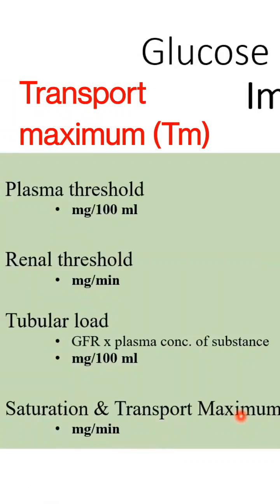There are substances which, like glucose, require transport proteins. They come into the PCT and require binding to a protein transporter to get from one place to another.